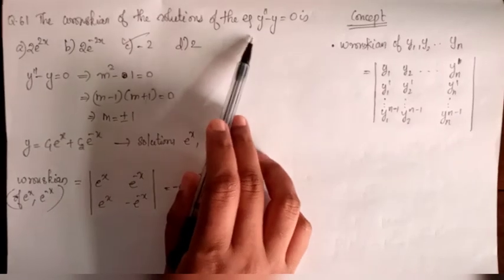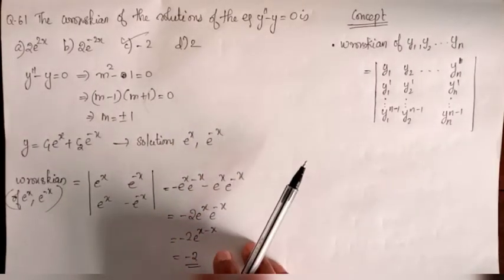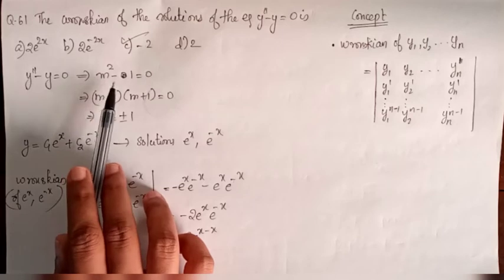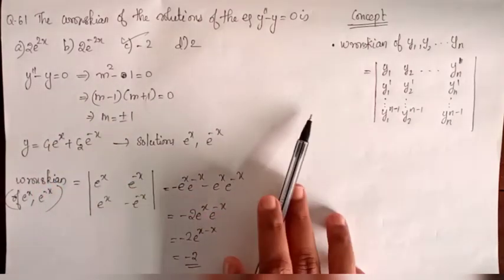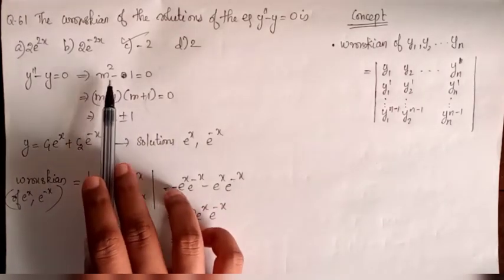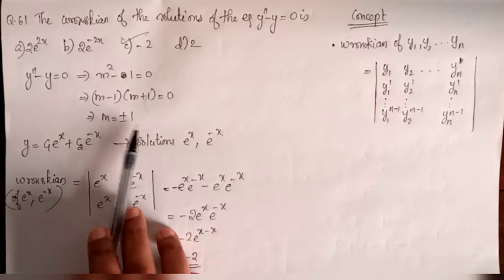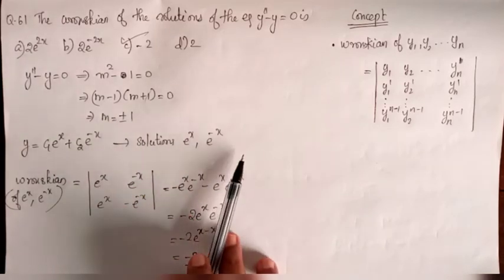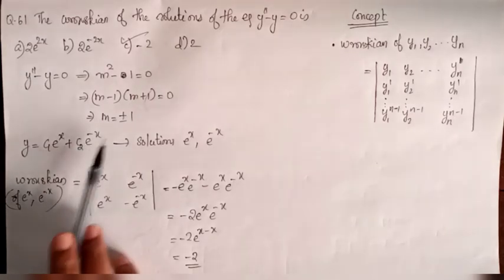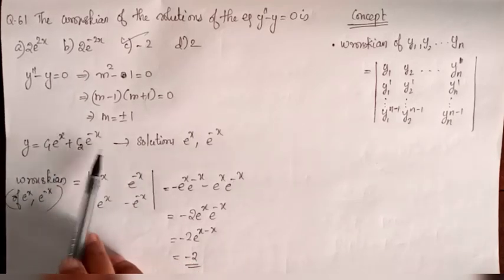Question 61: Find the Wronskian of the solutions of the equation y'' - y = 0. First we solve: the auxiliary equation is m² - 1 = 0, so (m-1)(m+1) = 0, giving m = ±1. We have real distinct roots, so y = c₁e^x + c₂e^(-x). The solutions are e^x and e^(-x).